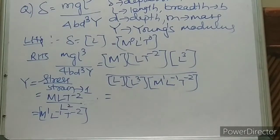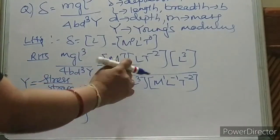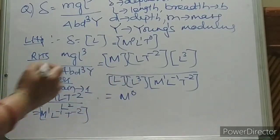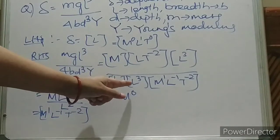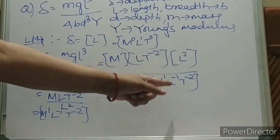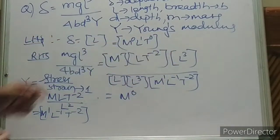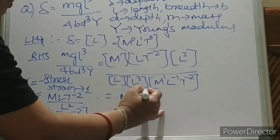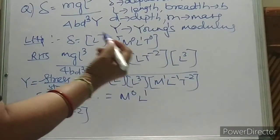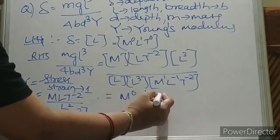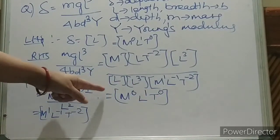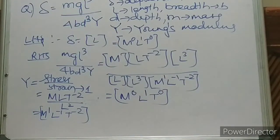Now solving: M in numerator cancels M in denominator, giving M⁰. For L: numerator has L × L³ = L⁴; denominator has L × L³ × L⁻¹ = L³. So L⁴/L³ = L¹. For T: T⁻² in numerator, T⁻² in denominator — they cancel, giving T⁰. So RHS = M⁰ L¹ T⁰ = L. LHS equals RHS, so the equation is dimensionally correct.